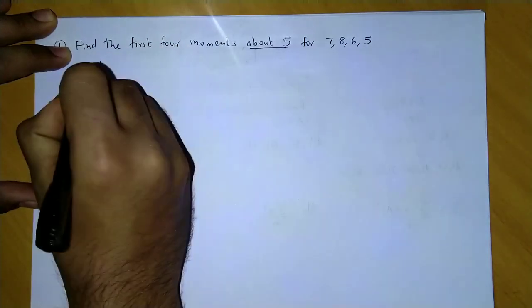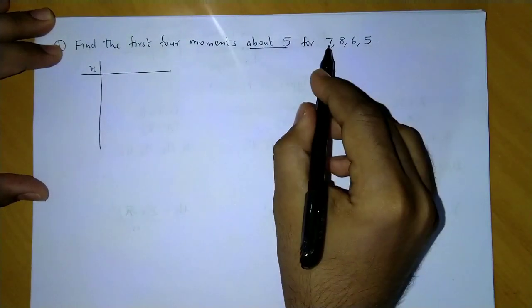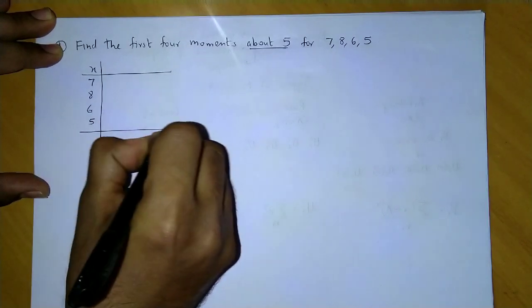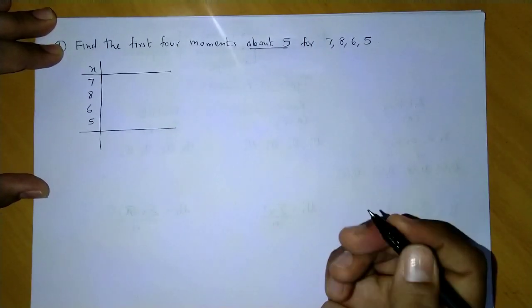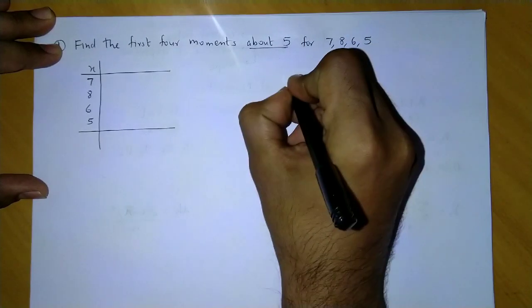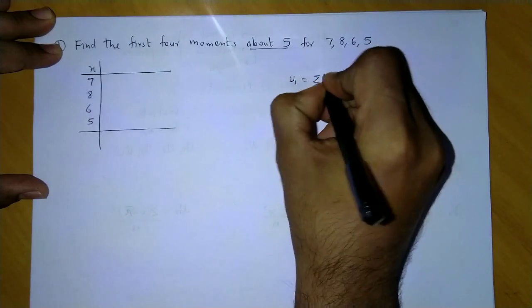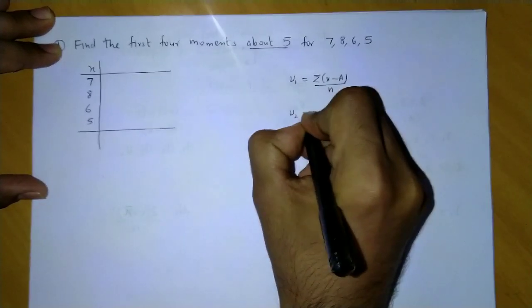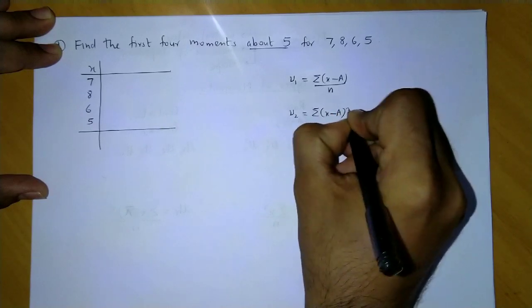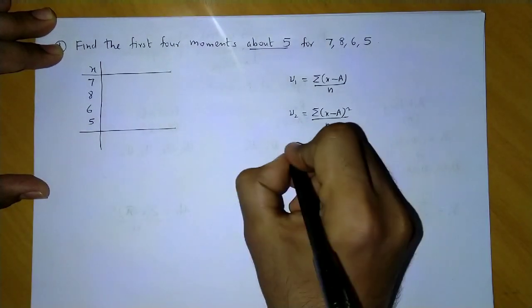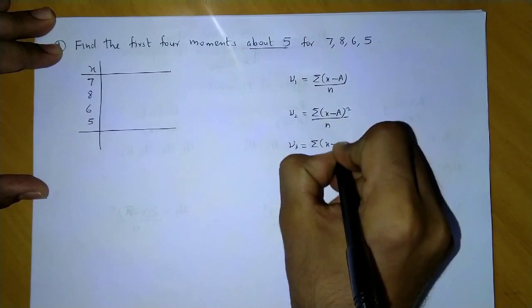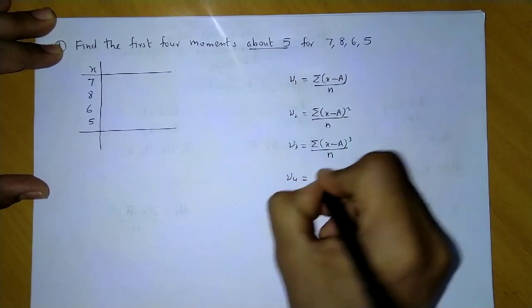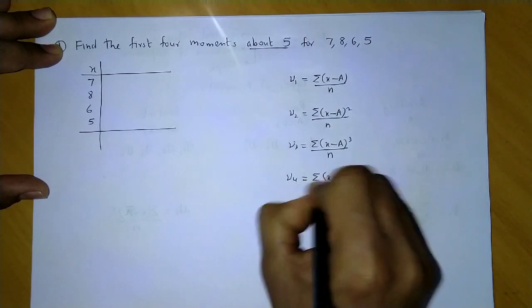The values of x are 7, 8, 6, 5. Now before we proceed further, first one is ν₁ which is summation (x minus a) upon n. Next is ν₂ which would be summation (x minus a) squared upon n. Next comes ν₃ which is summation (x minus a) cubed upon n. Last is ν₄ which is summation (x minus a) raised to four upon n.